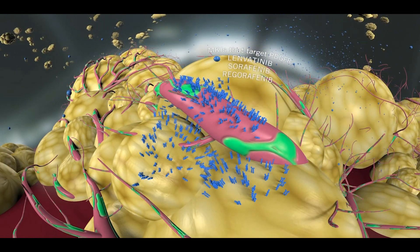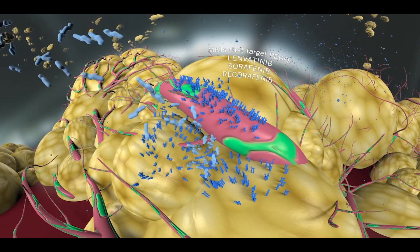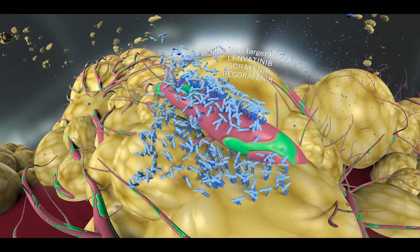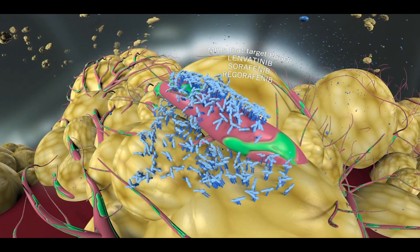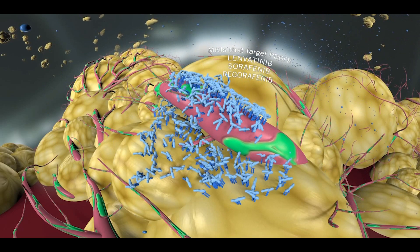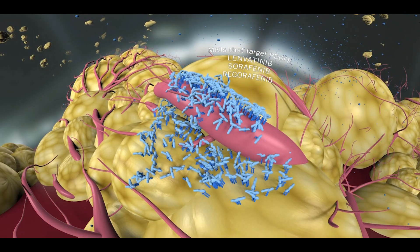Several multi-kinase inhibitors, including lenvatinib, sorafenib, and regorafenib, limit neovascularization by blocking the activity of the PDGF receptor.